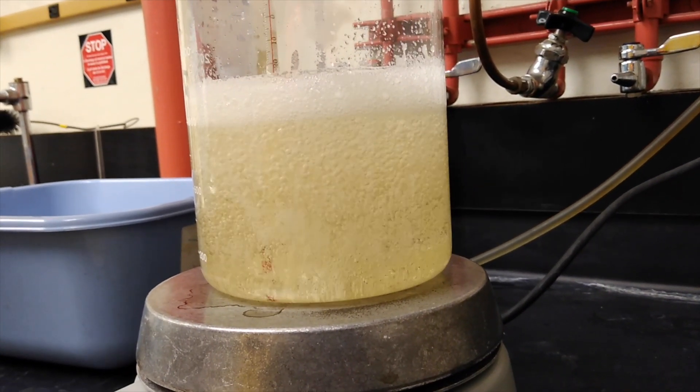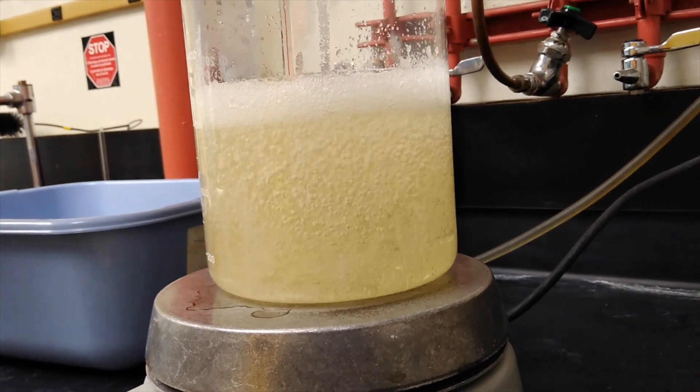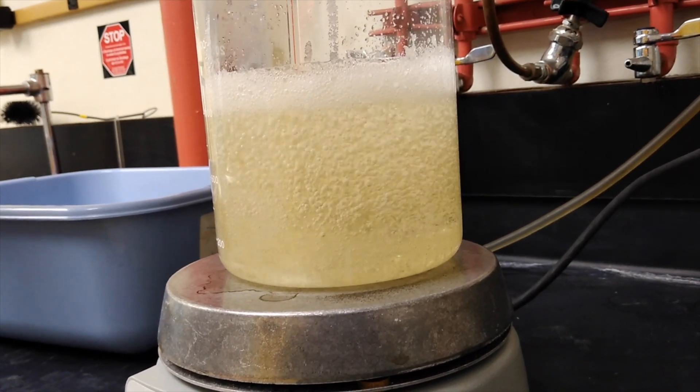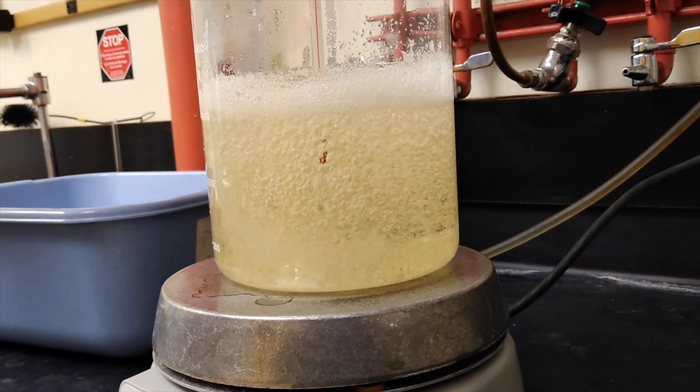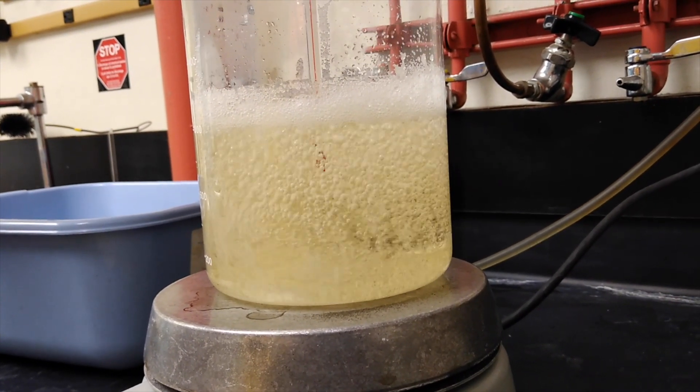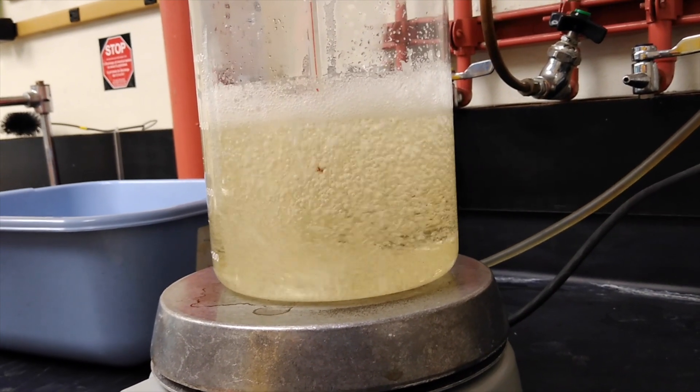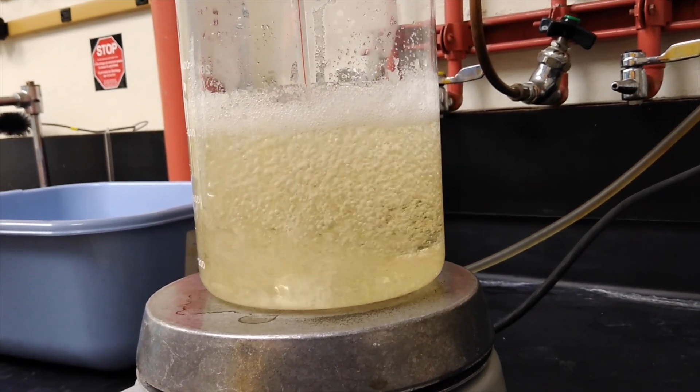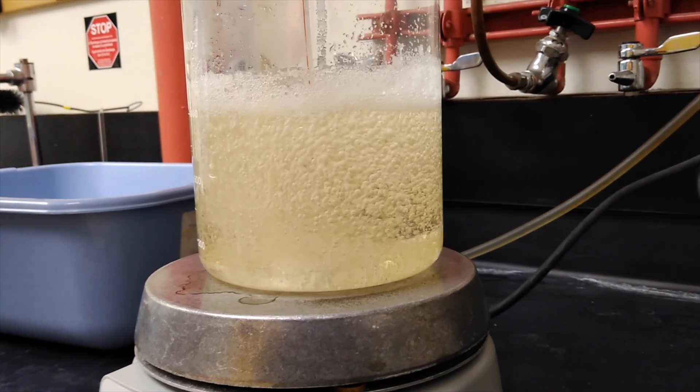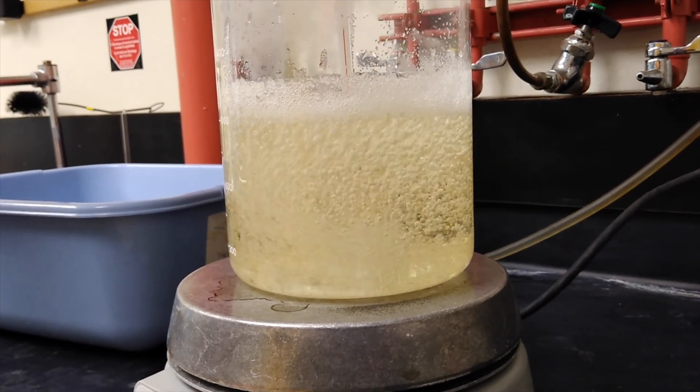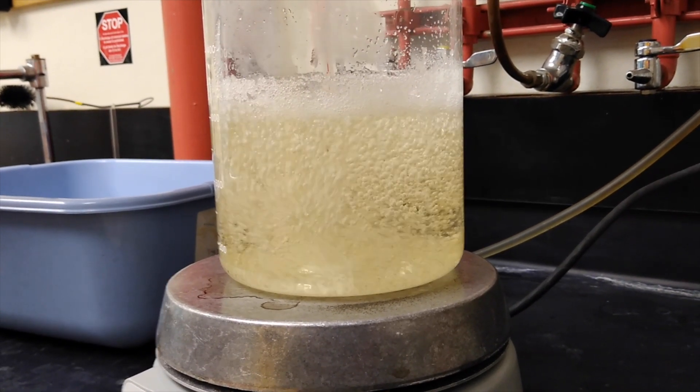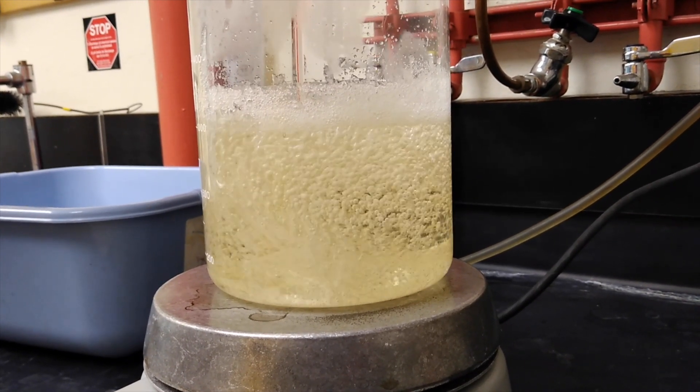When the sugar is all dissolved, the solution will be nice and clear. The temperature for this is around 110 degrees Celsius. This is what we call the syruping point. Now most of the sugar has dissolved, and we're about 15 minutes. This is about 110 degrees Celsius.